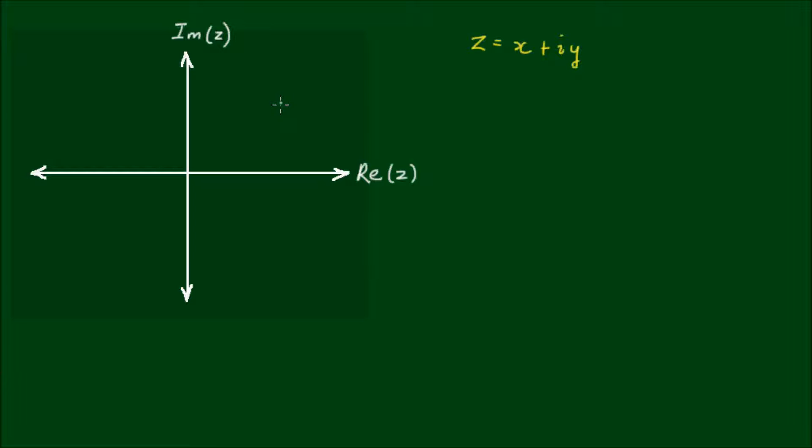This complex number will have the coordinates of x and y on the complex plane, or the argand plane. And then I can draw a vector from the origin to this coordinate to represent this complex number visually.